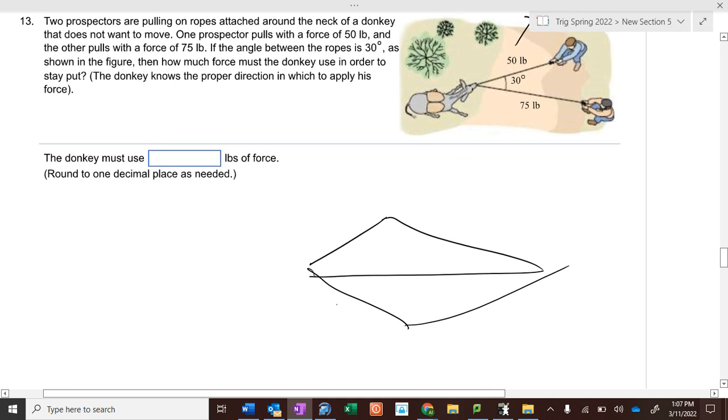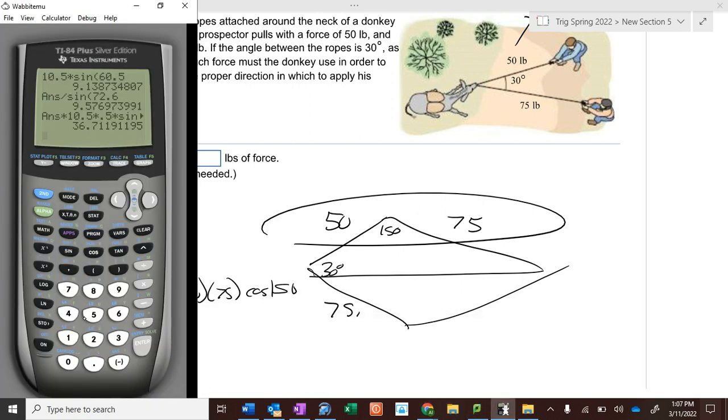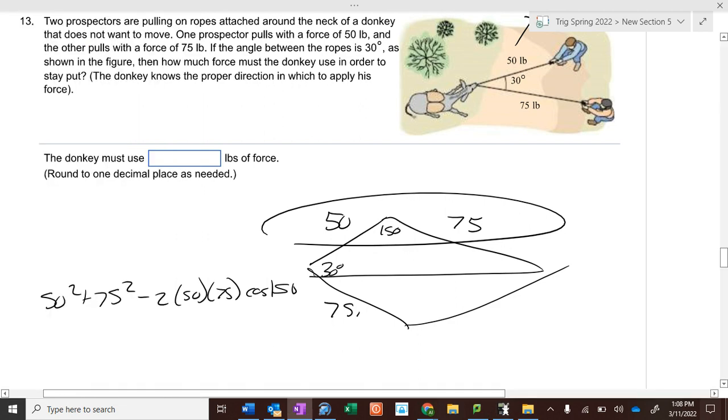And the donkey problem, last one. So there's a parallelogram there, 75 and 50, so that makes this 75. If this is a 30 degree angle here, this is a 150 degree angle. There's my side-angle-side. So 50 squared plus 75 squared minus 2 times 50 times 75 cosine of 150, and then take the square root of the answer, gives me 120.9. Which makes sense because these add up to 125, so it should be slightly less because they're working at an angle. So I will put out the sample test.